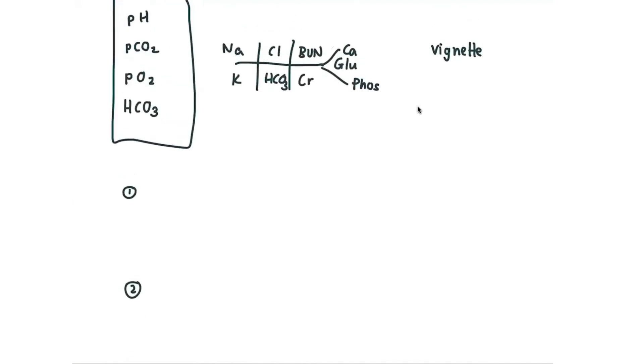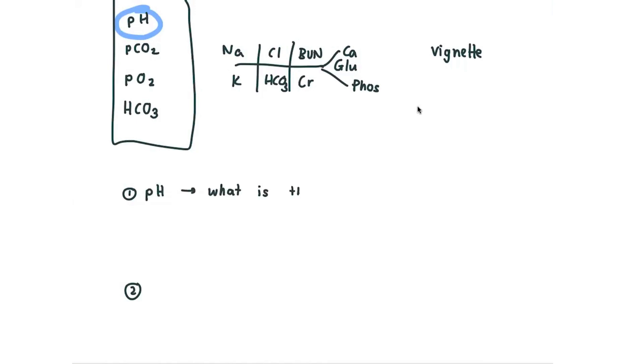The first thing that I'm going to do is I'm going to be looking at the pH. And when I look at the pH, I ask myself, what is the primary disturbance? So define what is the primary disturbance. And as you know, if you are typically less than 7.35, you're going to be acidosis. And if you're greater than 7.45, you're going to be alkalosis.